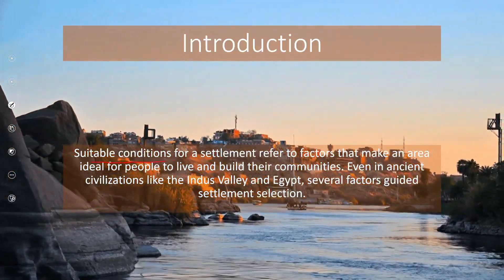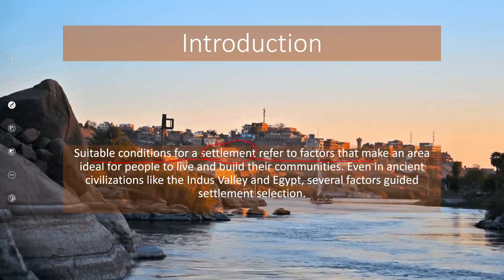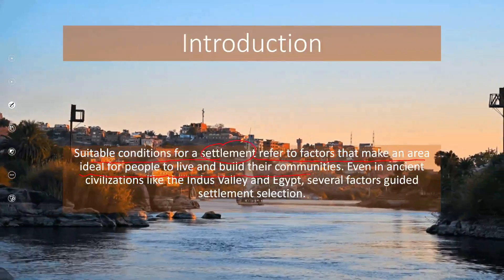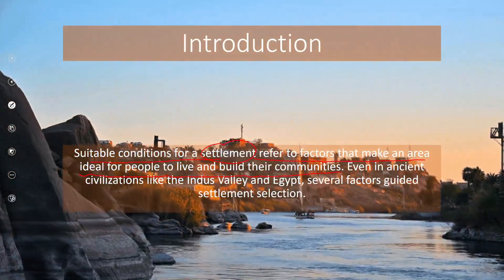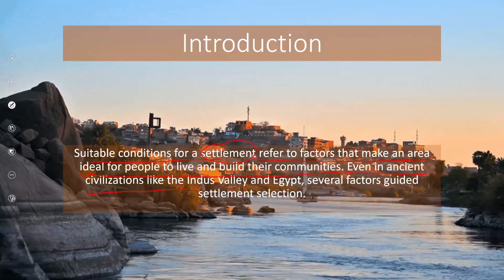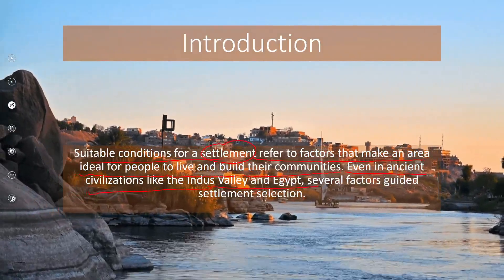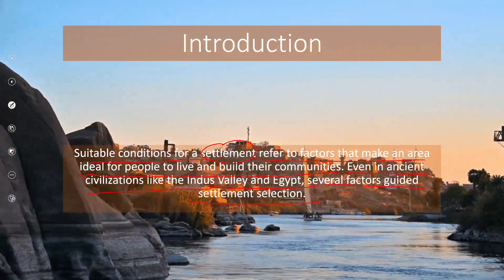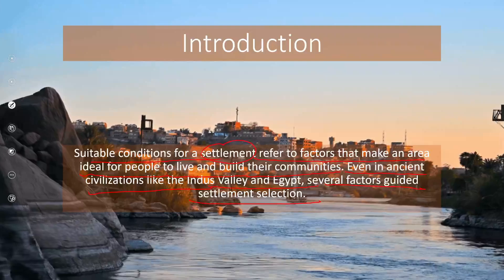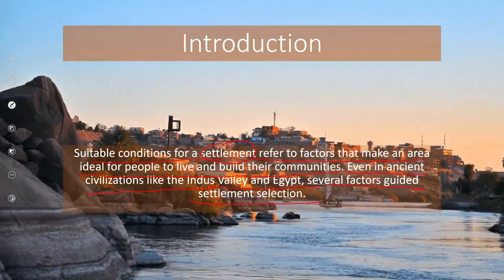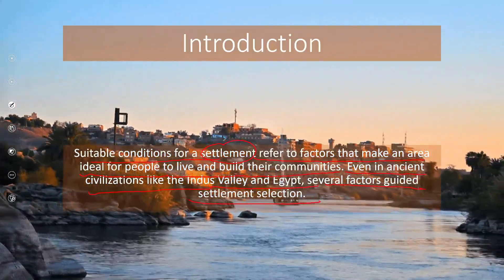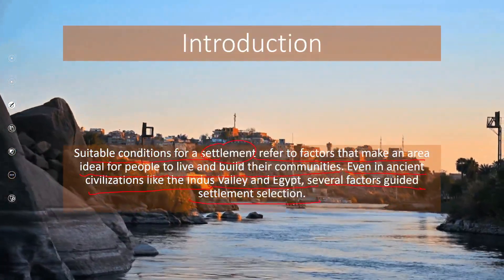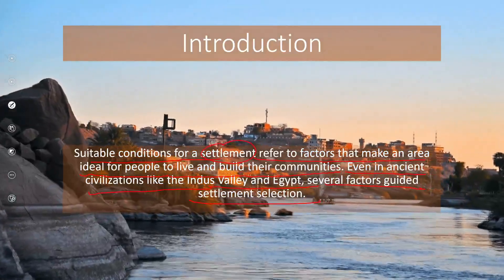Suitable conditions for a settlement refer to factors that make an area ideal for people to live and build their communities. Even in ancient civilizations like the Indus Valley and Egypt, several factors guided settlements. In the cities of the Indus Valley or along the Nile, people examined many things, and when the conditions suited them, they started to build their homes.